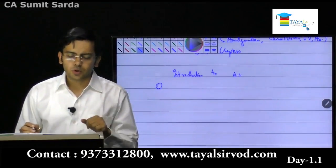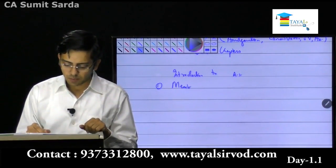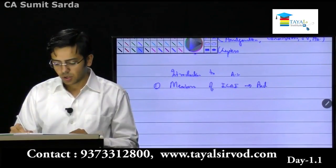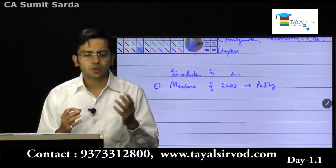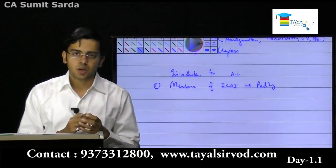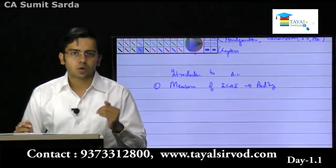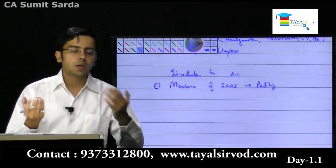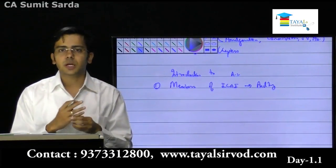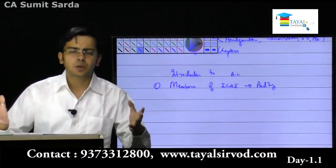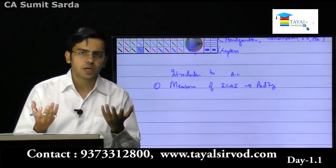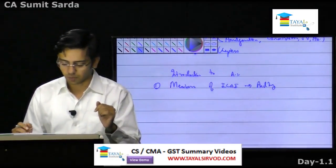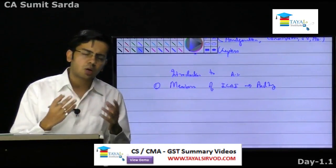Why do we need accounting standards? They are basically required by the members of ICAI for auditing purposes. In auditing, they verify whether the books of accounts have been maintained as per the accounting standards. This is needed so that all over India, whichever books are being made, they should be comparable with each other. That is the reason there are certain uniform principles that have been made, to be followed by companies and persons all over India.